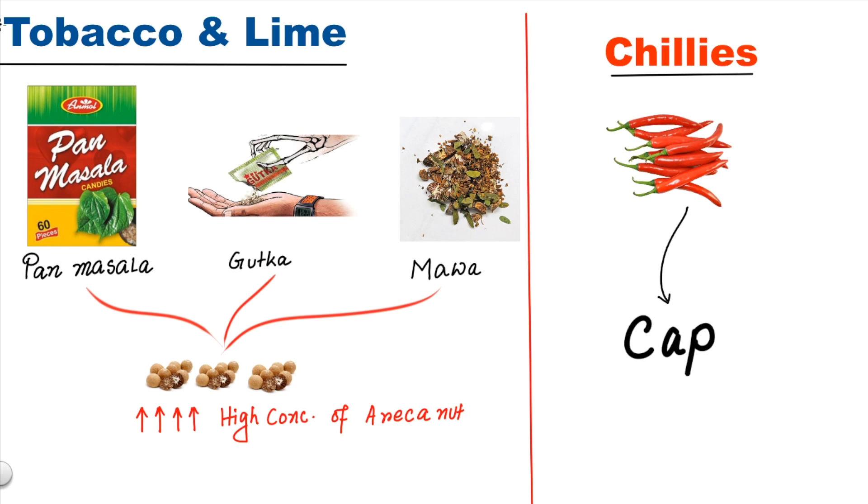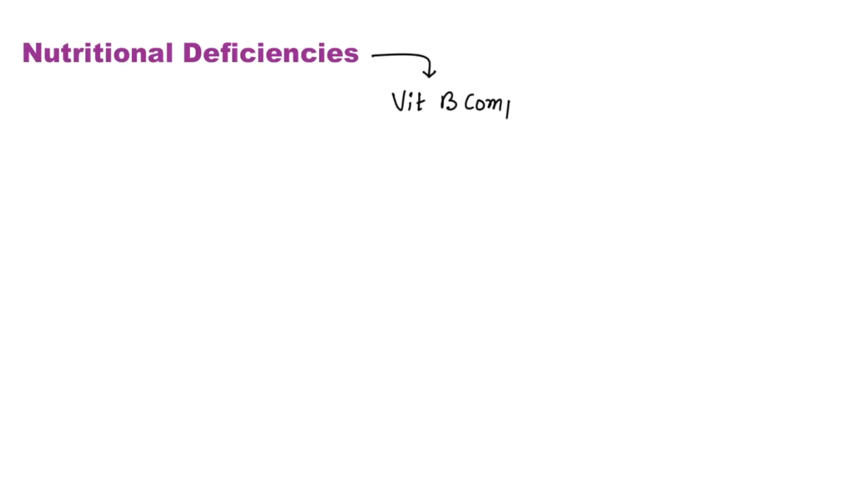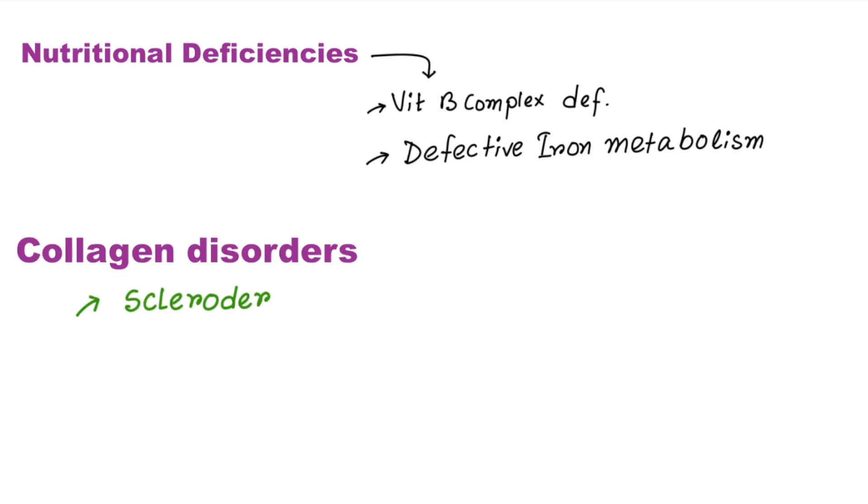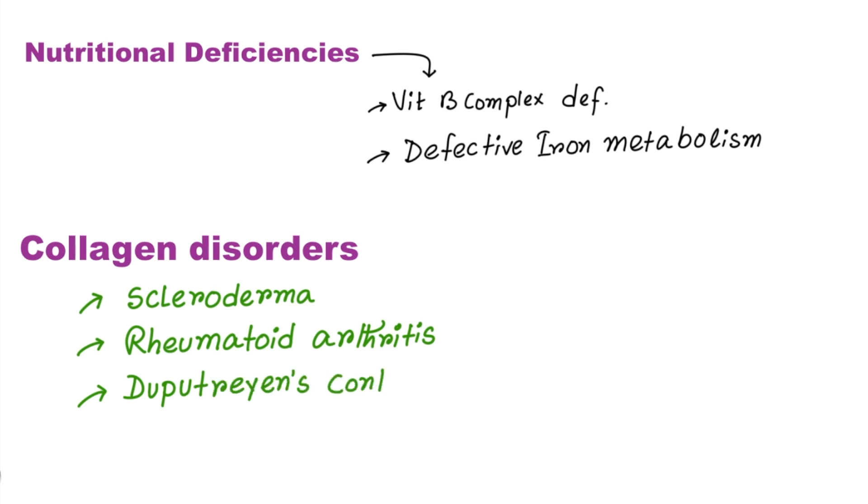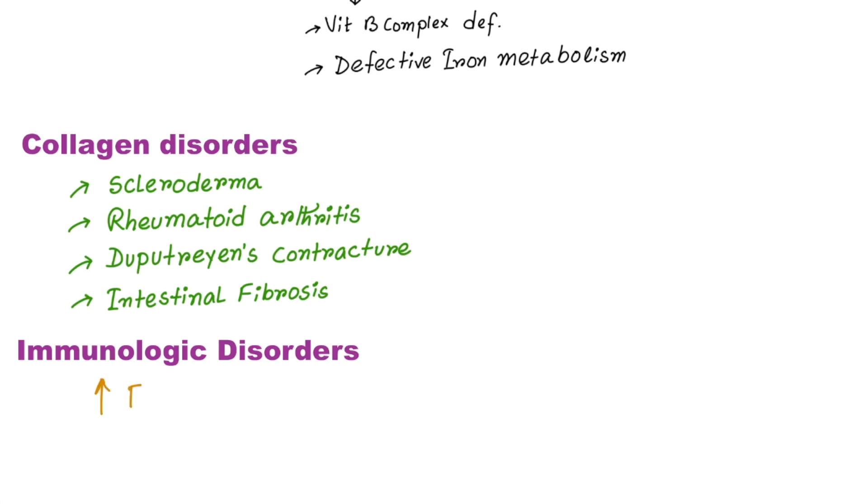Capsaicin is the active ingredient of chilies which also plays an etiologic role in oral submucous fibrosis. Other causative factors include nutritional deficiency such as vitamin B complex deficiency and defective iron metabolism, collagen vascular diseases like scleroderma, rheumatoid arthritis, Dupuytren's contracture and intestinal fibrosis. ESR and serum immunoglobulins like IgA, IgG and IgM are significantly raised in this condition.